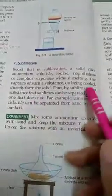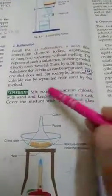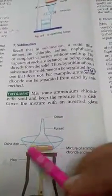Thus by sublimation, a substance that sublimes can be separated from one that does not. We can separate them. For example, ammonium chloride can be separated from sand by this method. Ammonium chloride with sand, keep in a mixture in a dish.